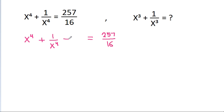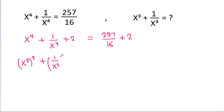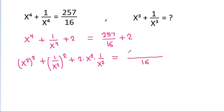If we add 2 to both sides, then x power 4, which is x square squared, plus 1 by x power 4, which is 1 by x square squared, plus 2 times x square times 1 by x square is equal to 257 plus 32, giving 289 by 16 — since 16 is the denominator and 2 times 16 is 32.